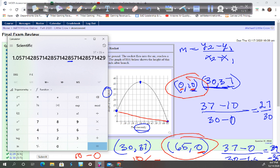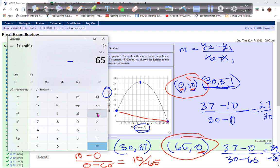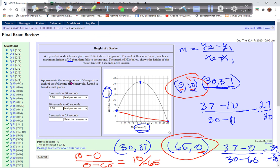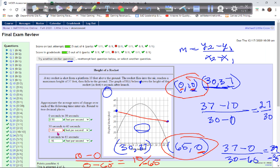So that's 10 over negative 65. Let's see what that gives us. 10 divided by 65, that's 0.15. And it's negative because it's negative. Negative 0.15, and again this is also in feet per second.